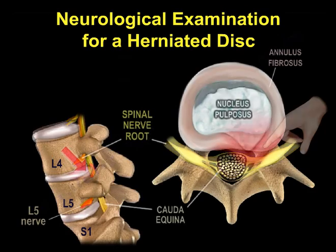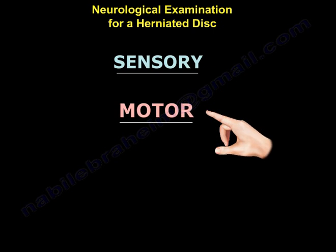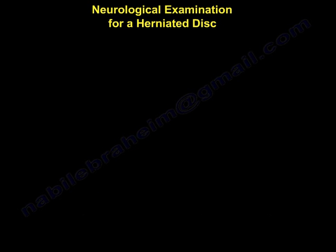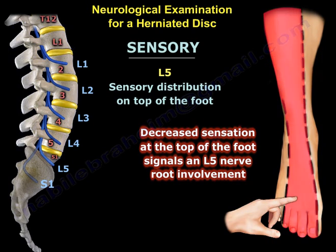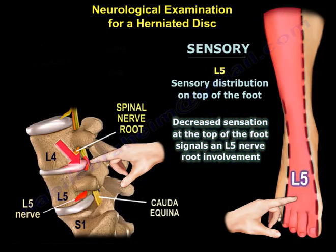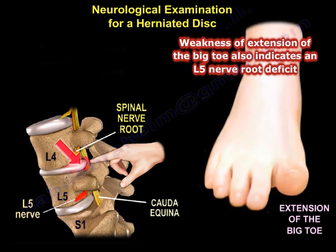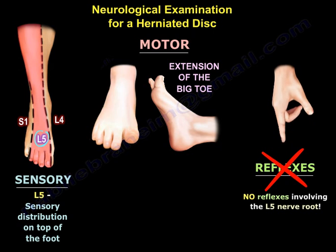Neurological examination for a herniated disc: sensory, motor, and reflex deficits may be present along specific nerve root distribution. For example, if you have decreased sensation at the top of the foot, that means the L5 nerve root is involved. And if you have weakness of extension of the big toe, that also indicates L5 nerve root deficit. But there is no reflex that you can test for the L5 nerve root.